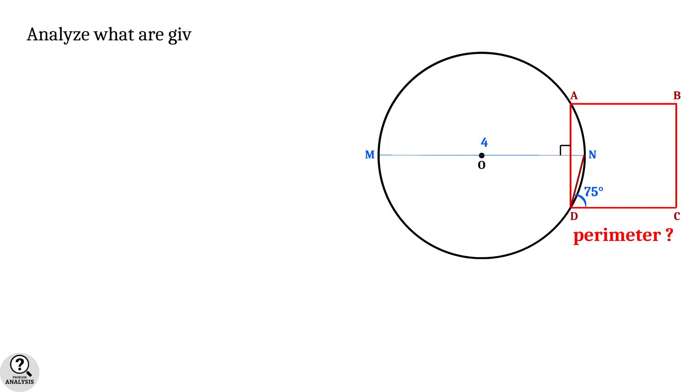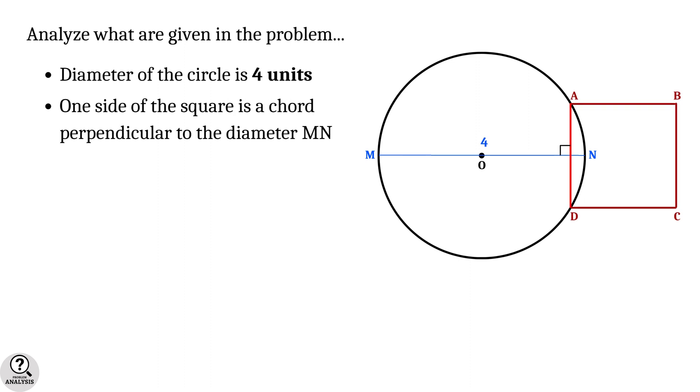Now, let's analyze what are given in the problem. First of all, the diameter of the circle is 4 units. Secondly, one side of the square is a chord of the circle that is perpendicular to the given diameter MN. And finally, angle CDN is equal to 75 degrees.